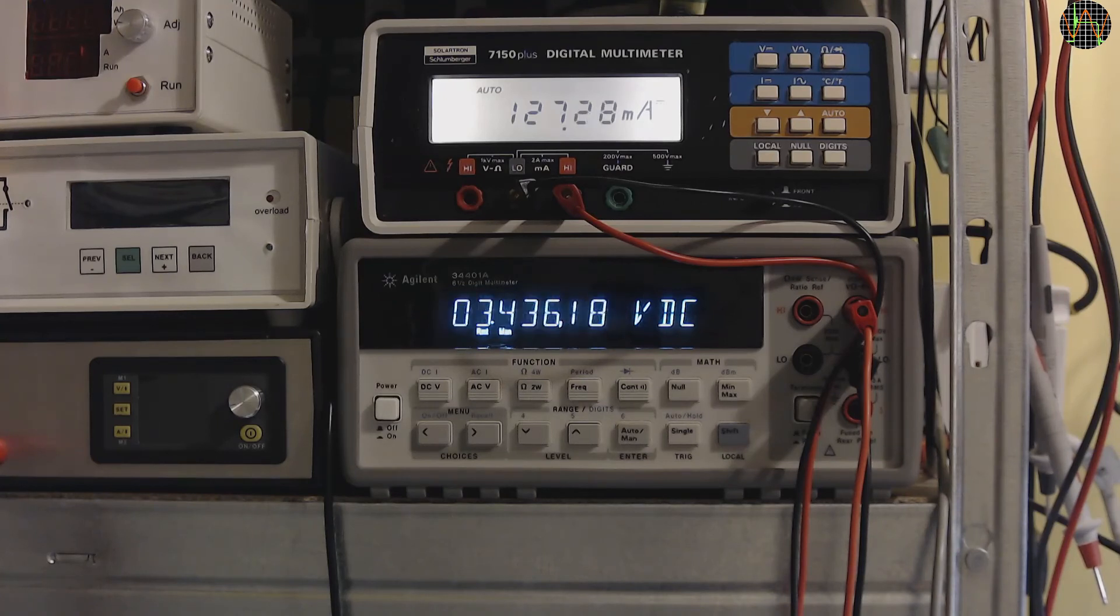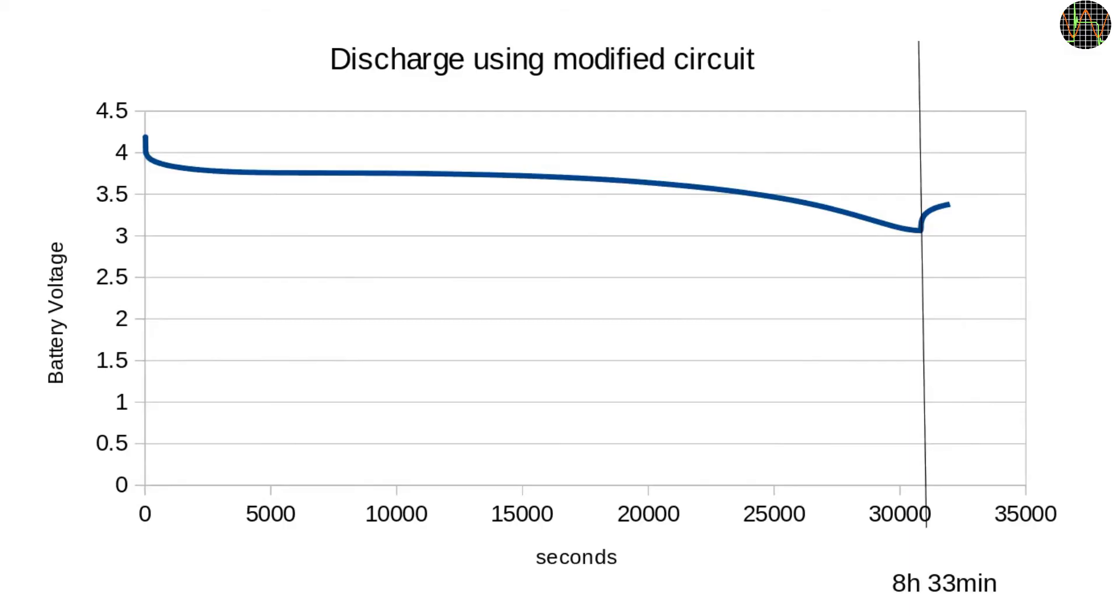This is a plot of the recorded voltage data. If anything, it appears running the light at a slightly reduced current and a raised cut-off voltage due to the Schottky diode has unexpectedly extended the time it stays lit by about an hour to eight and a half. I am happy with that result.